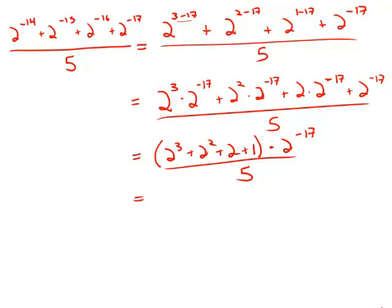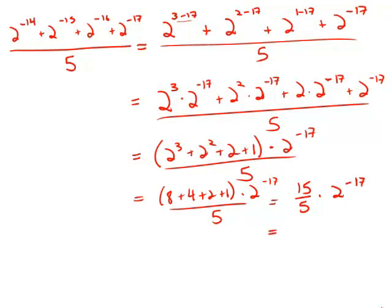Now, evaluating what we have in the parentheses there, that's 8 plus 4 plus 2 plus 1 times 2 to the negative 17 divided by 5. What's in the parentheses adds up to 15, so we get 15 over 5 times 2 to the negative 17, or, in other words, 3 times 2 to the negative 17. So this is 3 times 2 to the negative 17. Answer choice C.